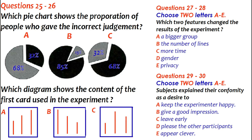What experiments which occurred sometime later found was that other factors can influence the result. For example, when there were more so-called participants, there was even more conformity. On the other hand, when people were able to respond in secrecy by writing the result down, for instance, they made fewer incorrect judgments about the lines.